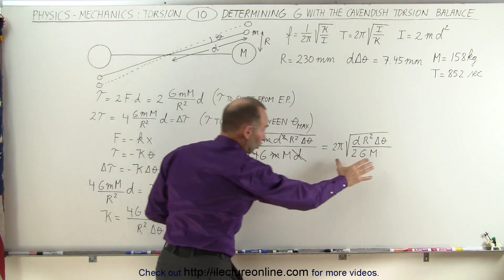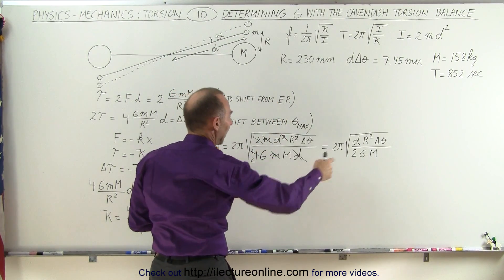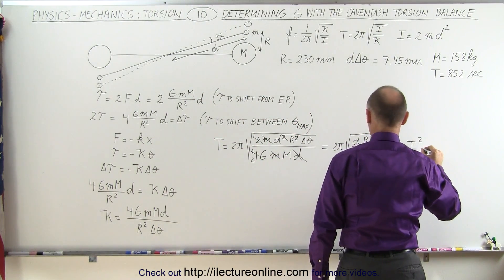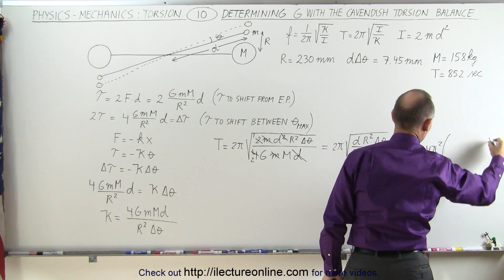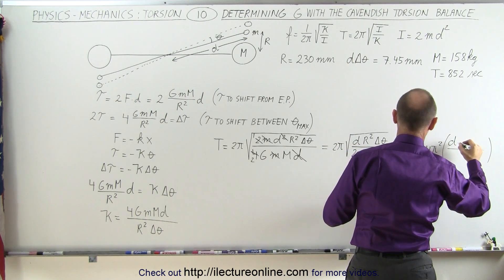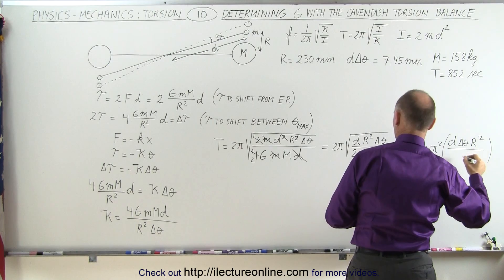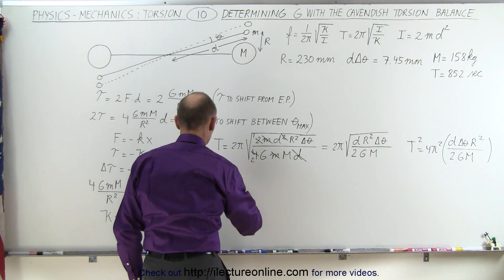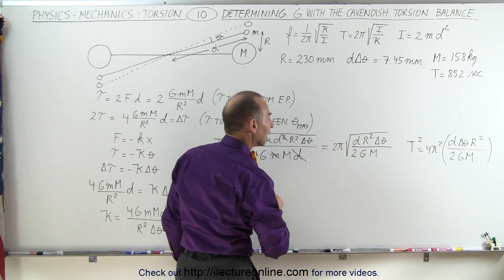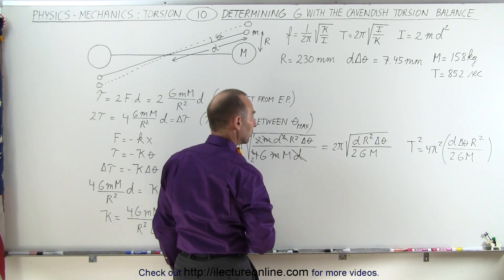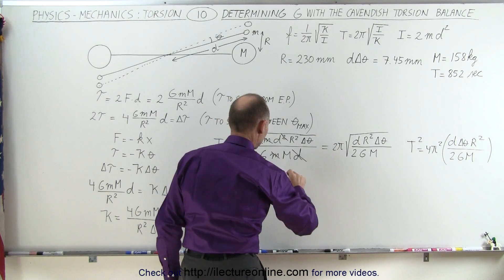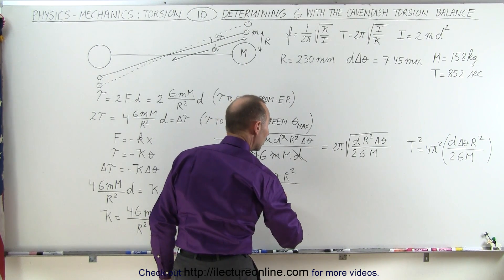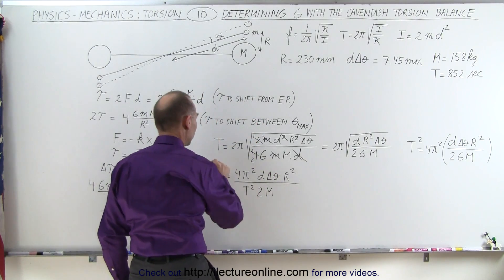Which means we can solve this equation now for G. We're going to square both sides and bring G over here. So I'm going to square both sides and end up with T squared is equal to 4 pi squared times what's left here, which is D delta theta times R squared times 2 G M. And then you can see I can solve that for G. G is equal to 4 pi squared in the numerator, times D delta theta times R squared, divided by the period squared times 2 and times M.